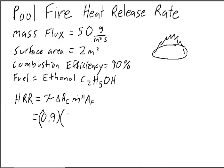The next thing we can look up in a table: the heat of combustion is 1232 kilojoules per mole. We want to pay attention to the units we are working in — we actually want this in kilojoules per gram rather than kilojoules per mole. So we need to figure out how many grams per mole ethanol is, and we can do that using the molecular weight.